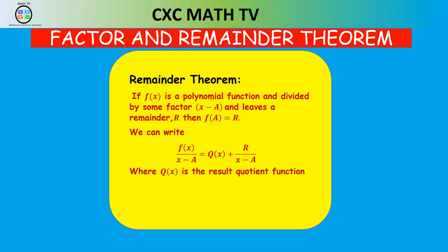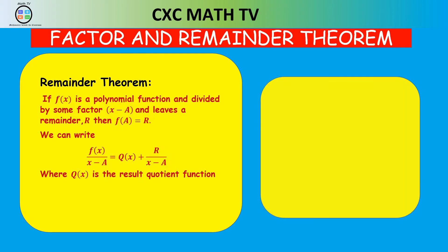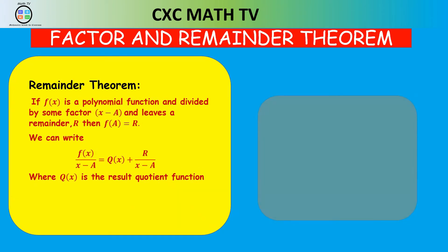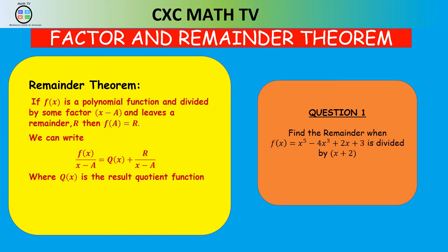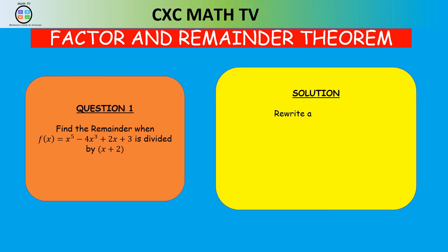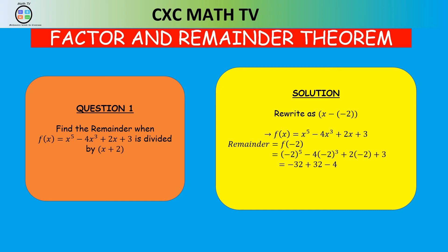That's it for the remainder theorem. Let's look at when we use remainder theorem — we use it to find unknown values of a function given the remainder when it is divided by some factor. For example, find the remainder when f(x) = x⁵ - 4x³ + 2x + 3 is divided by (x + 2). We rewrite x + 2 as x - (-2), so a = -2. f(-2) = (-2)⁵ - 4(-2)³ + 2(-2) + 3 = -32 + 32 - 4 + 3 = -1. So the remainder is -1.